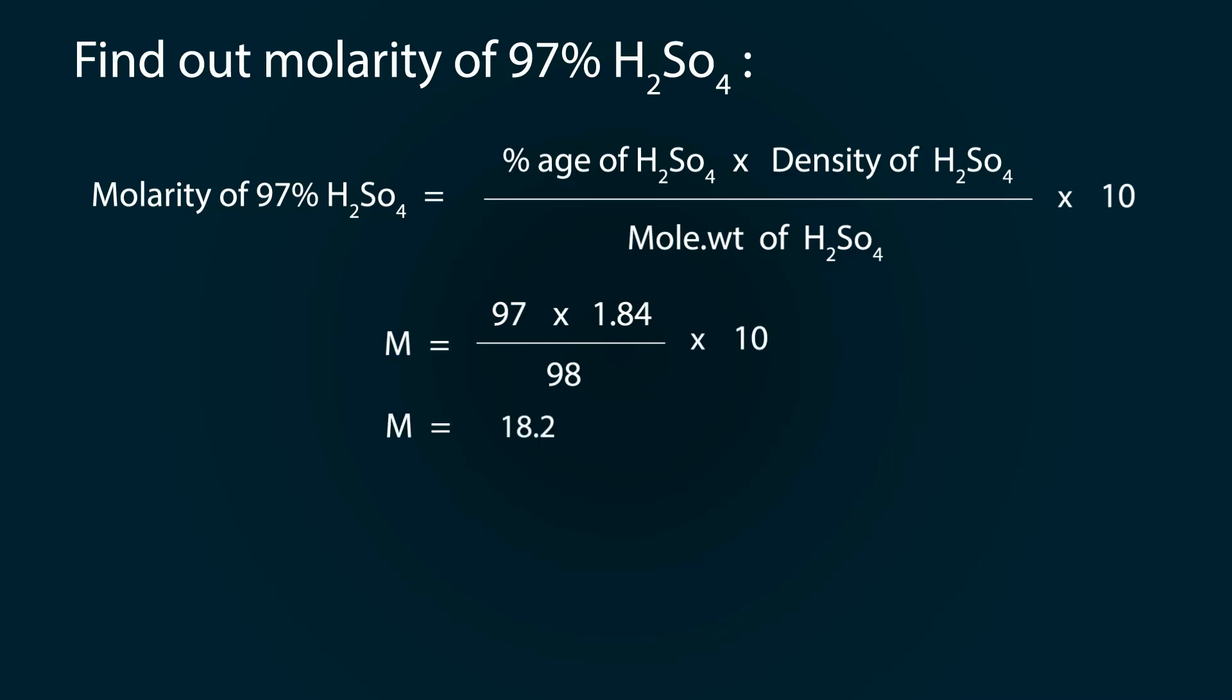We will convert it into normality with the formula: molarity multiplied by acidity or basicity. 18.2 multiplied by 2 will give us the normality of 36.4. Now let's start our preparation.